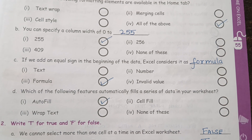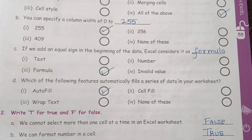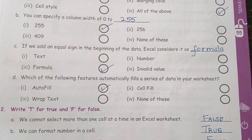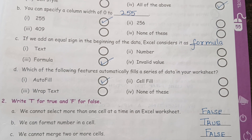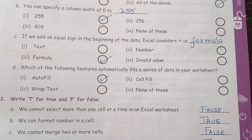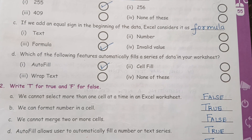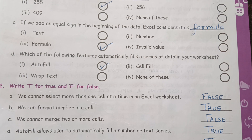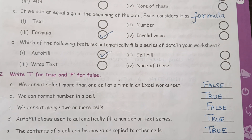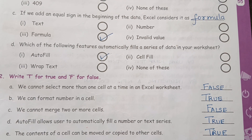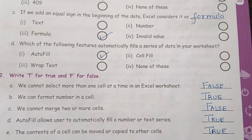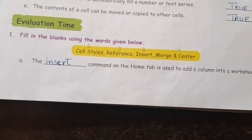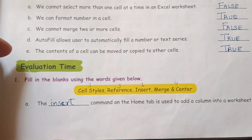Next is True or False. We cannot select more than one cell at a time in an Excel worksheet — False. We can format a number in a cell — True. We cannot merge two or more cells — False. AutoFill allows the user to automatically fill a number or text series — True. The contents of a cell can be moved or copied to other cells — True.